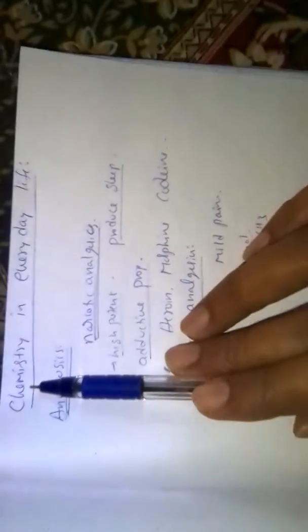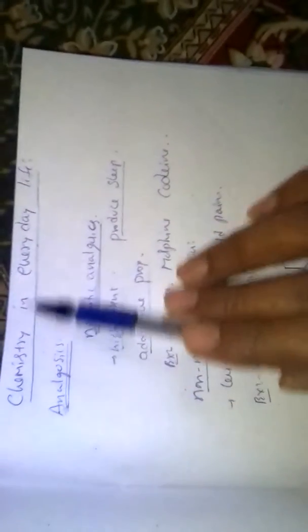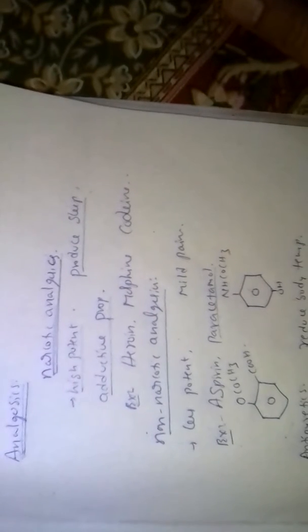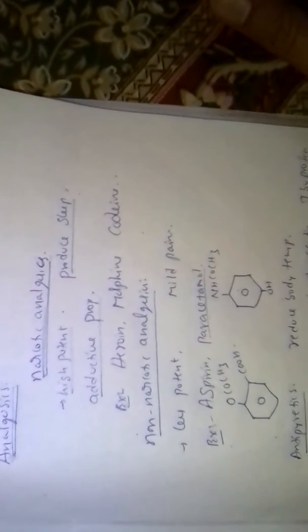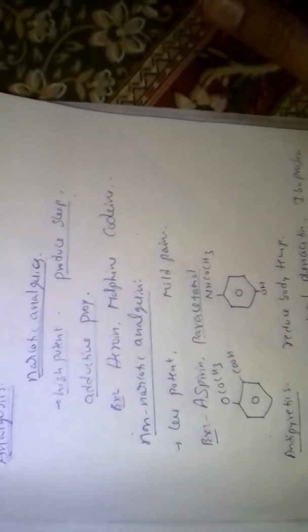Some concepts of chemistry in everyday life. First, analgesics — drugs which reduce pain without disturbing the central nervous system, such as causing impairment of coordination, convulsions, or paralysis. These are called analgesics. They are of two types: non-narcotic and narcotic.